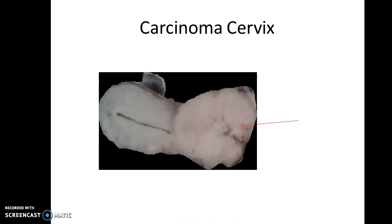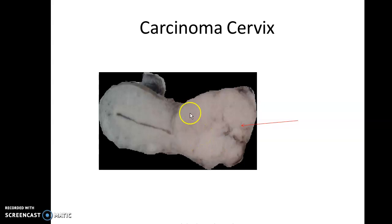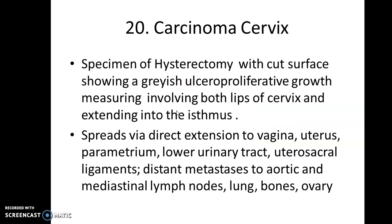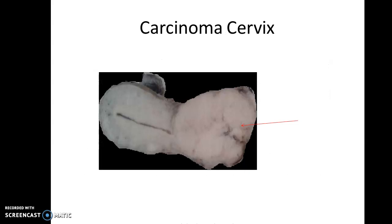The next specimen is of a uterus with a fungating mass in the lower end of the uterus. This is a specimen of carcinoma of cervix. The specimen of hysterectomy with cut surface shows a grayish ulceroproliferative growth — you have to give the measurement involving both lips of the cervix extending into the isthmus.